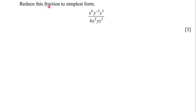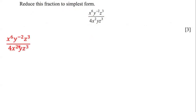Our goal is to reduce this fraction to simplest form. We have x to the power of 6 times y to the power of negative 2 times z to the power of 3, all over 4 times x to the power of 2 times y times z to the power of 3. Our goal is to simplify this particular expression.